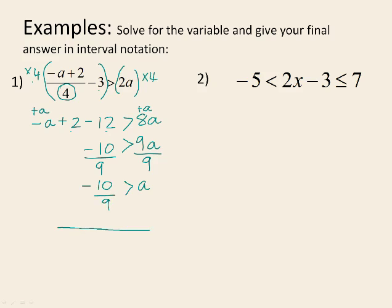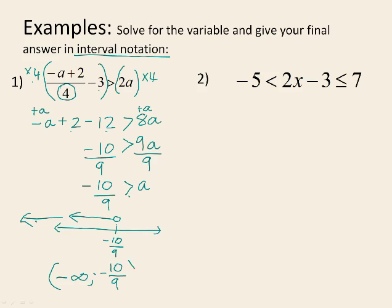On a number line, negative 10 over 9 represents all of the numbers A is smaller than. It's just smaller than, so we have an open circle above negative 10 over 9, and we draw a line to the left with an arrow. We were asked for the final solution in interval notation: the smallest number is negative infinity, which always gets a round bracket. Negative 10 over 9 had an open circle — just a less-than symbol — so it also gets a round bracket.